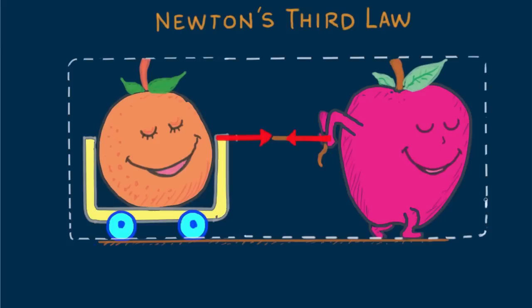Now let's consider a larger system enclosing both the orange and the apple. Notice now that the pair of vectors are internal to this system. In this case, they do cancel each other, so they play no role in moving or accelerating the system. That's why I'm erasing them.